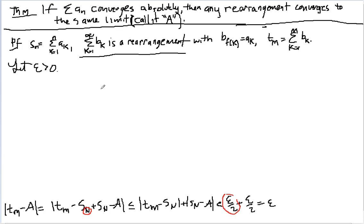So the first thing I'm going to do is, right there, there exists an N1 such that |s_n - a| is less than epsilon over 2 for all n greater than or equal to N1. Why is that true? Well, it's true because the series a_n converges absolutely, so therefore it converges.